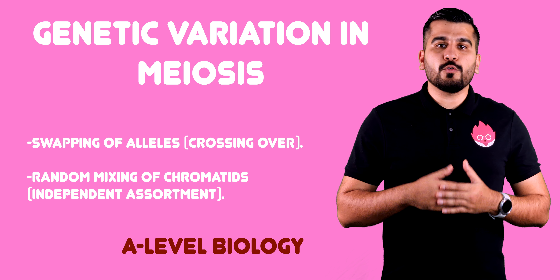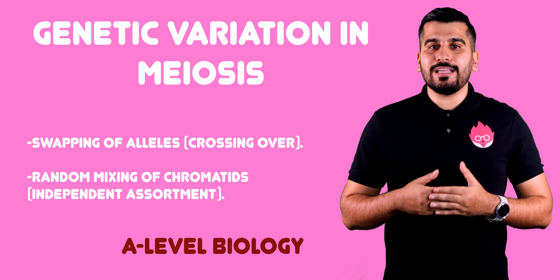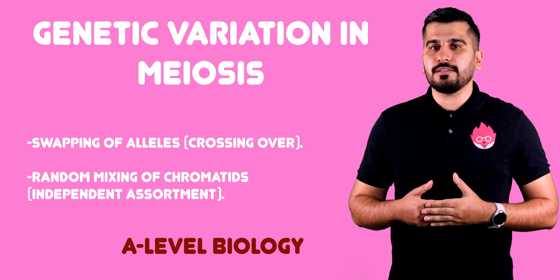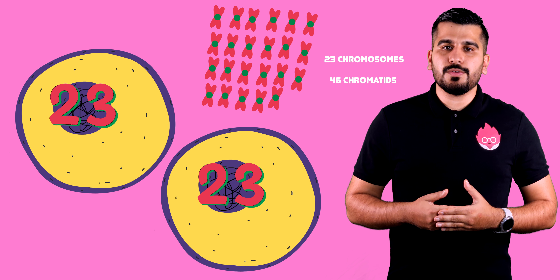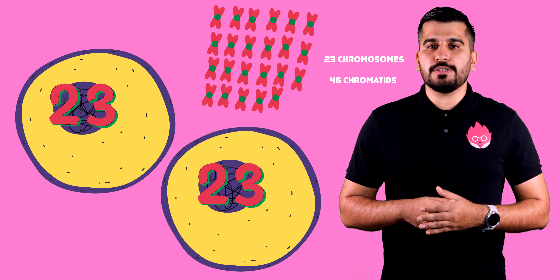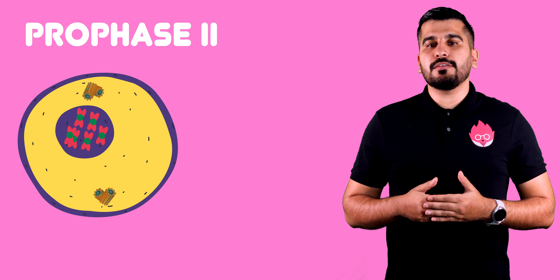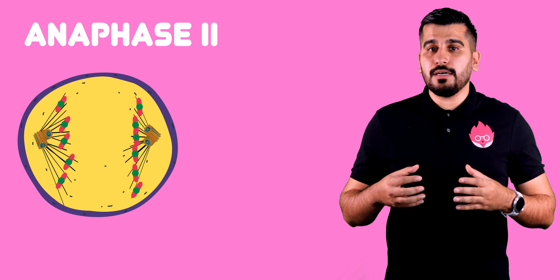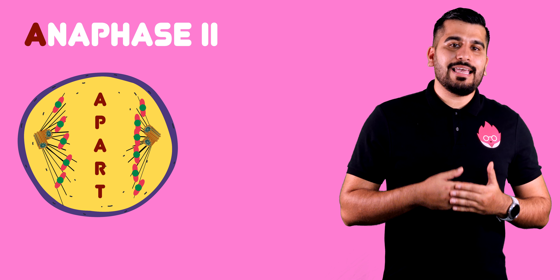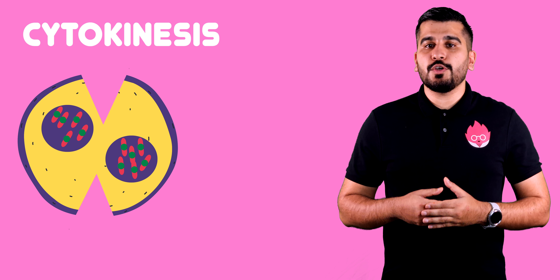The swapping of alleles and the random mixing of chromatids creates variation in the cells. At the end of the first stage of meiosis, you have two cells that have 23 chromosomes each. In the second cycle of division, the chromatids line up along the center of the cell again and are pulled apart to either end. At the end of the second stage of meiosis, you have four cells that have 23 chromosomes each, and they are genetically different from each other.